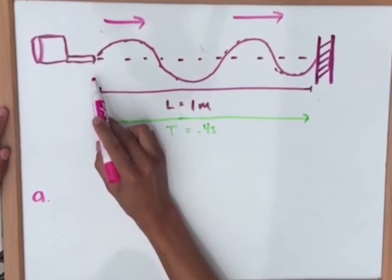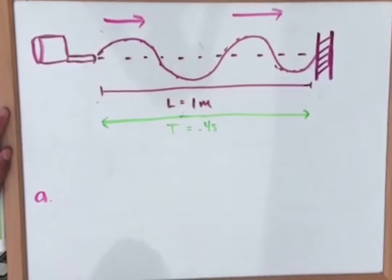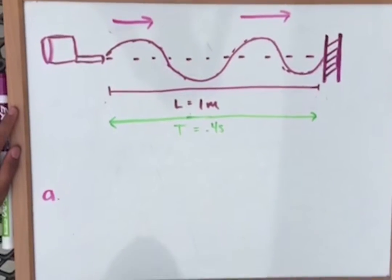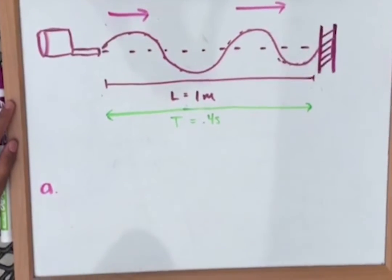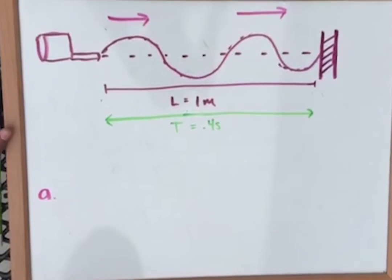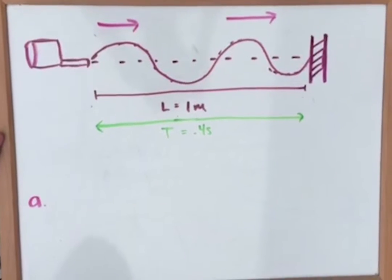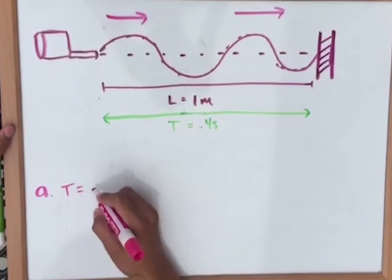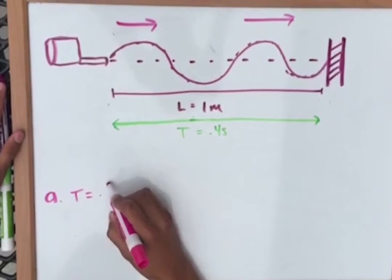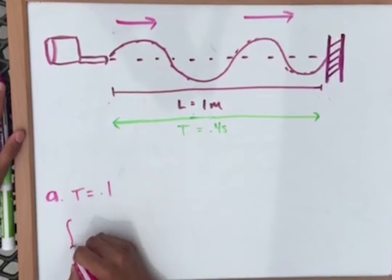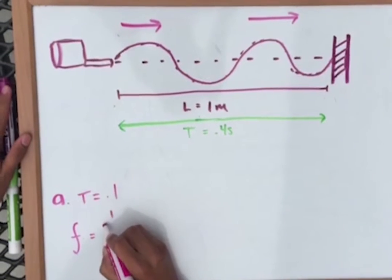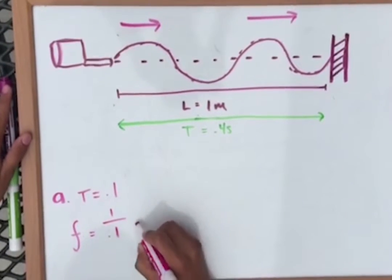It takes 0.4 seconds to get from the oscillator to the wall and back again. So the time it takes to get from the oscillator to the wall is just 0.2 seconds. And there are two wavelengths in that one length, so to find the period for that one wavelength is 0.2 divided by 2, which is 0.1. And to find the frequency, it is 1 divided by the period. So 1 divided by 0.1 equals 10 Hertz.